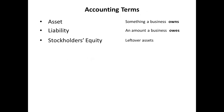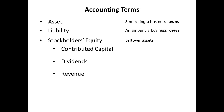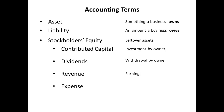As it turns out, we find it useful to subdivide stockholders' equity into four categories. They are contributed capital, dividends, revenue, and expense. A short definition of contributed capital is investment by owner. Dividends is defined as withdrawal by owner. A short definition of revenue is earnings. Expense has two useful short definitions which actually mean the same thing: a cost of doing business, or a used-up asset.